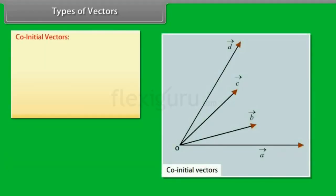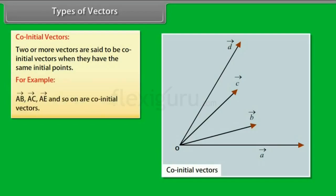Co-Initial Vectors: Two or more vectors are said to be co-initial vectors when they have the same initial points. For example, vectors AB, AC, AE and so on are co-initial vectors.